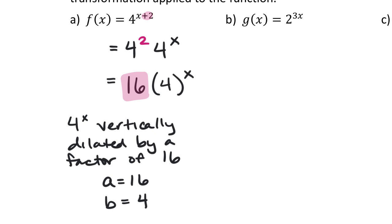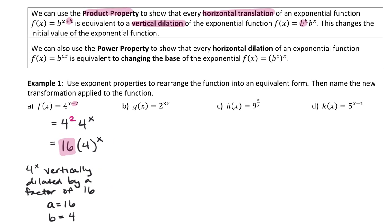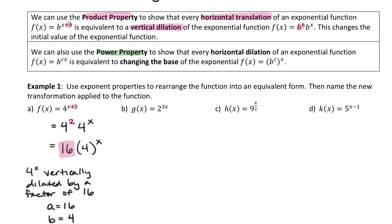We can do the same thing with the power property. The second key idea says we can use the power property to show that every horizontal dilation — where we multiplied by a number on the inside of an exponential function — is equivalent to changing the base of the exponential function itself. You're not normally allowed to change the base of an exponential function; bases stay the same at all times, except when doing this kind of problem.